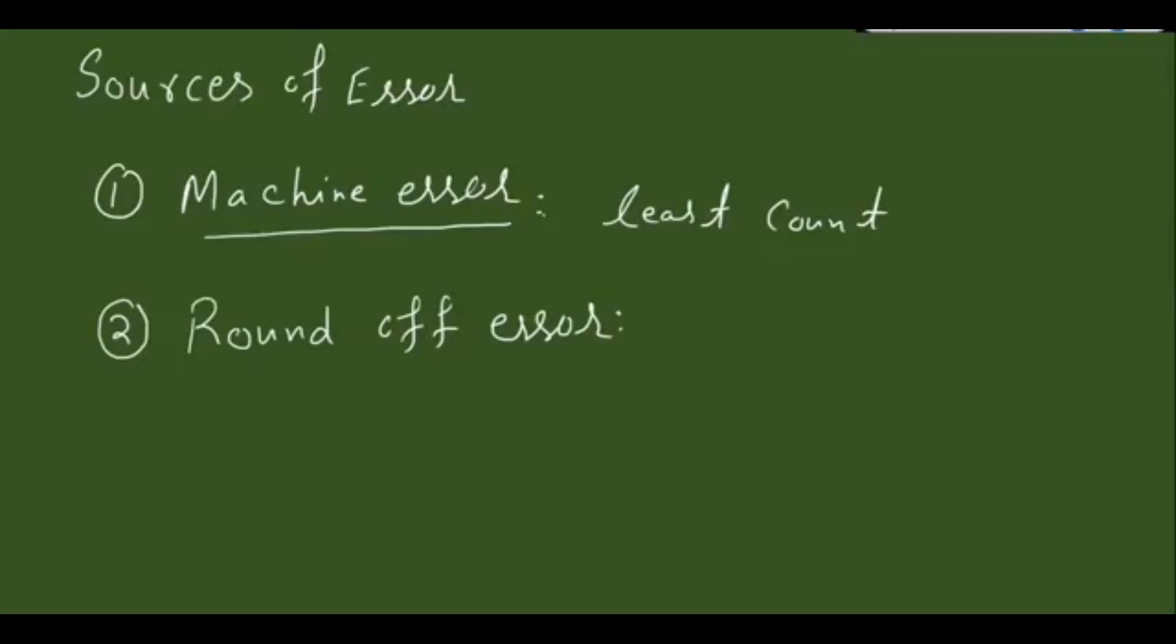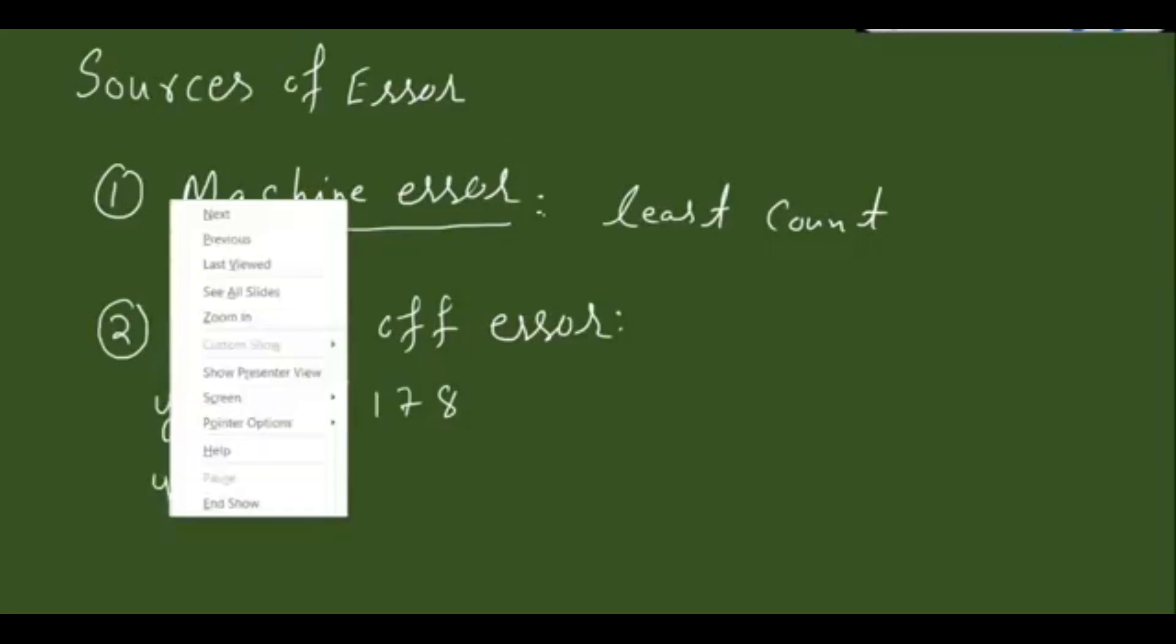For example, there is a number, let's say 2.5178. This is some reading y. Let's assume this is the exact reading. But due to calculation point of view, we decided not to use this whole number. We want to use its approximation instead.